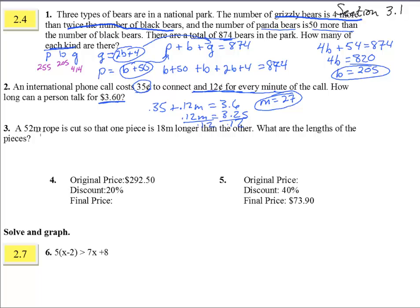All right, a 52 meter rope is cut so that one piece, so we have this rope here, it's cut right here. So we have one piece, this guy, is 18 meters longer than the other. So if this guy is like x, then this guy is x plus 18, and how long is the rope all together? 52 meters, that gives us our equation. x plus 18, that's a longer piece, plus a smaller piece, has to equal up to 52.